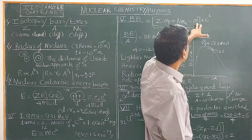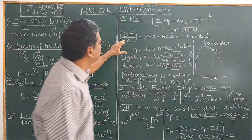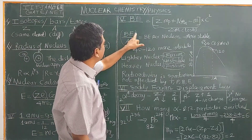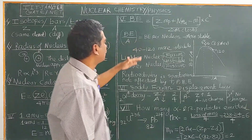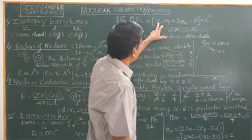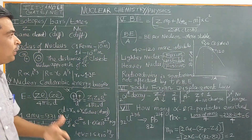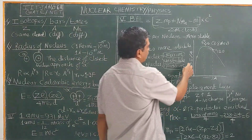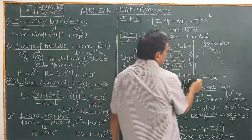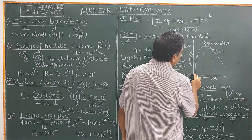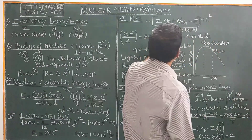Binding energy per nucleon is calculated by dividing the total binding energy by the mass number A (number of protons plus neutrons). This gives the relative stability of the nucleus. If we plot binding energy per nucleon versus atomic number, it increases with atomic number and reaches a maximum at iron-56, where the binding energy per nucleon is 8.8 MeV.